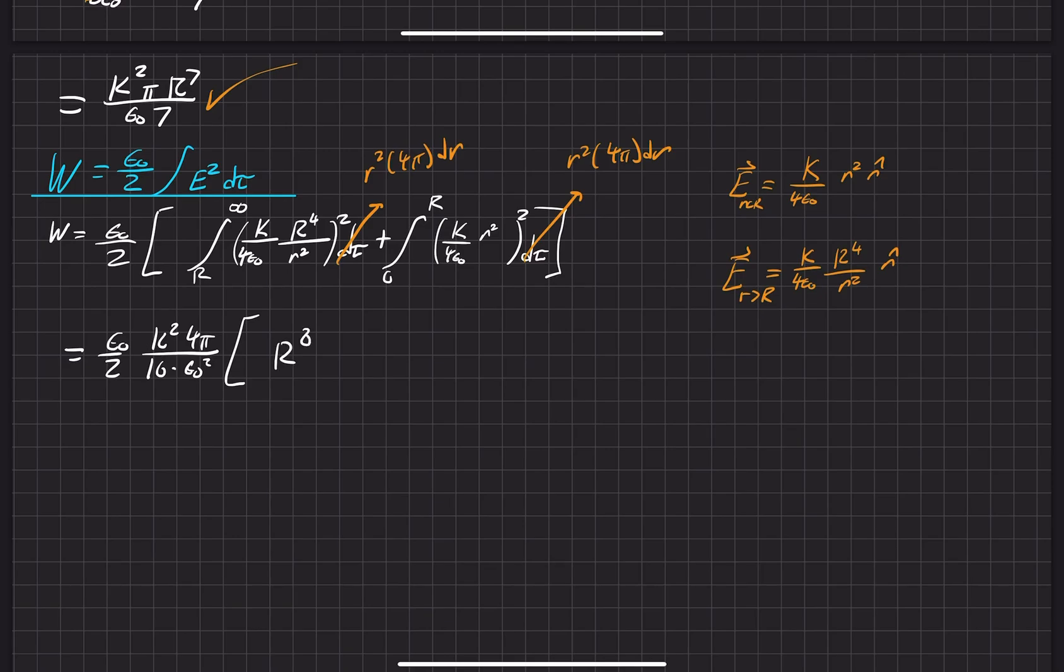We will pull out an r to the eighth because of this r to the fourth squared right here. And then we have our integral from infinity to r. And so now it's just an r to the fourth because of the one over r squared squared. And then we have our r squared dr there, and plus the integral from r to zero now. So we have a little r to the fourth r squared dr here.